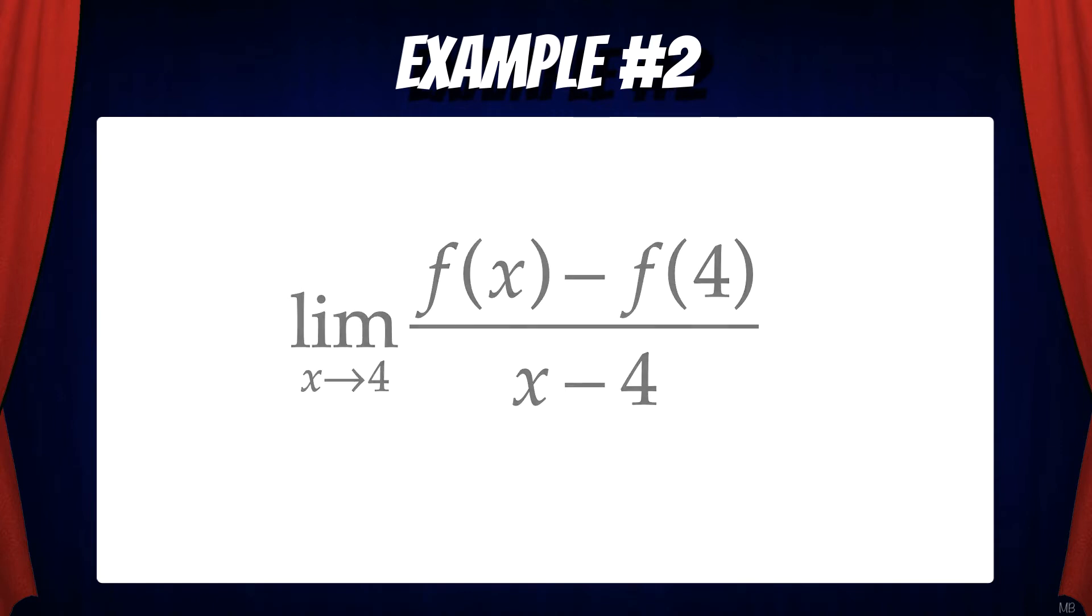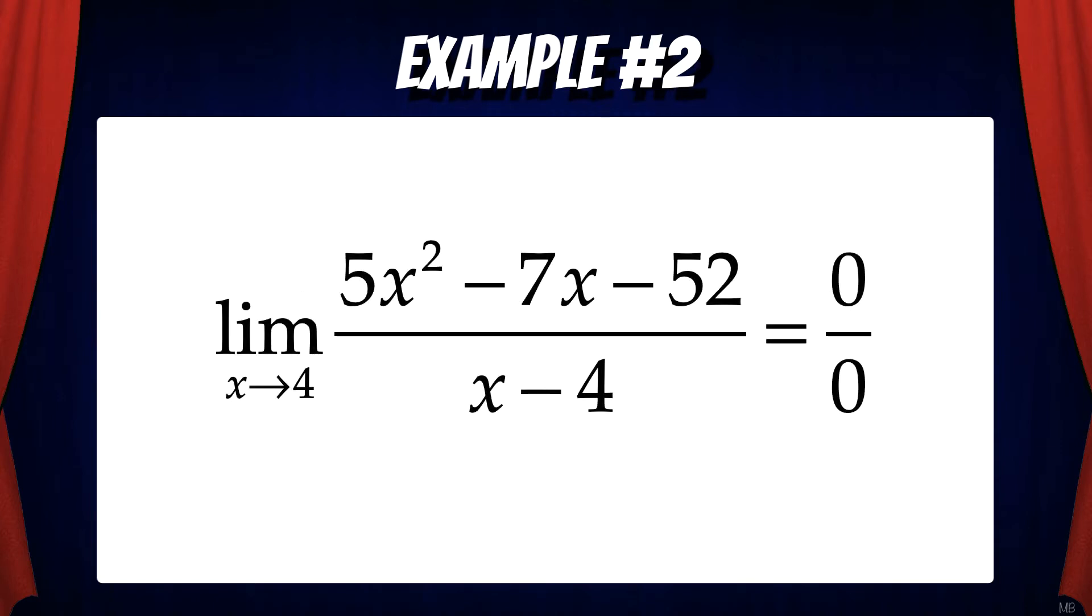Now we substitute f of x into the equation and f of 4. And we get the limit as x goes to 4 of 5x squared minus 7x minus 52 over x minus 4. Again if you plug in 4 to this limit you're going to get an indeterminate form. So now we have to do some algebra.